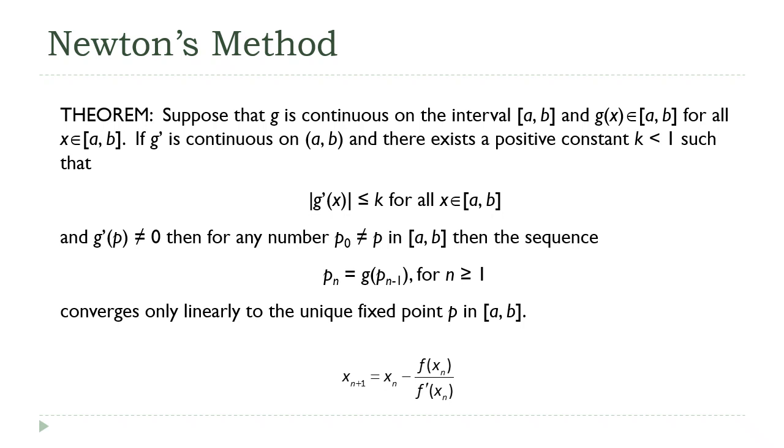This theorem is one we've actually seen before, back when we were talking about iterative methods in general. We proved this theorem that said if certain criteria are met, the box criterion and this bound on the derivative, then the sequence that we generated converged to the fixed point of the function that we were iterating. And in our case, that fixed point is going to be a solution to the equation that we started with.